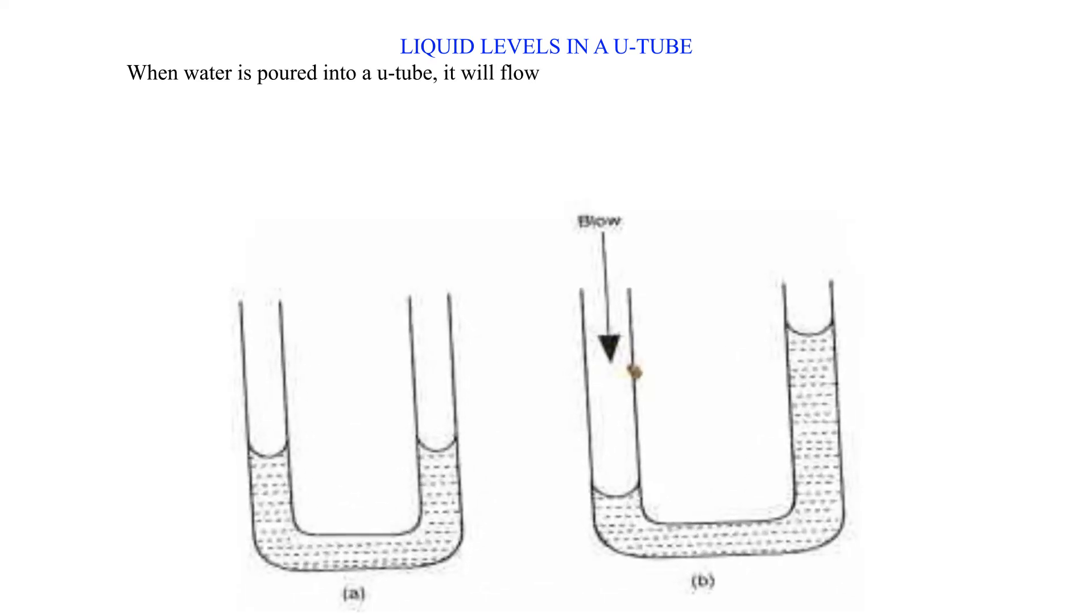Liquid levels in a U-tube: When water is poured into a U-tube, it flows into the other arm. Water settles in the tube with levels on both arms being the same.